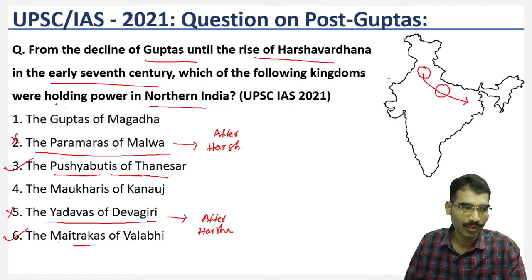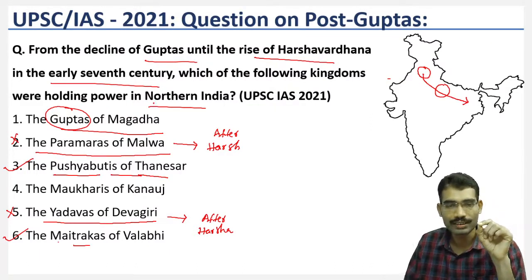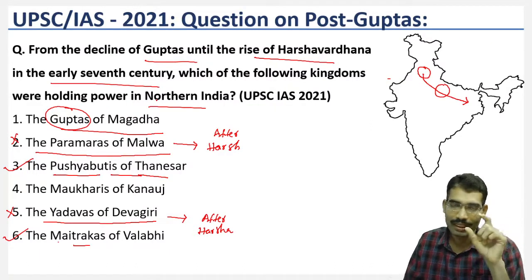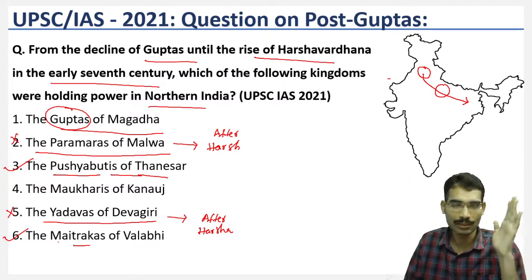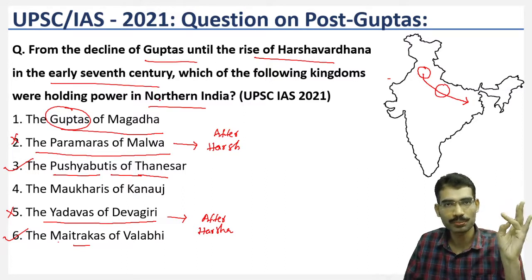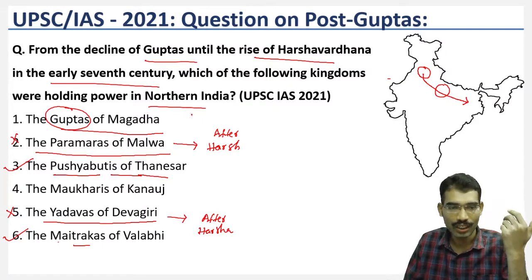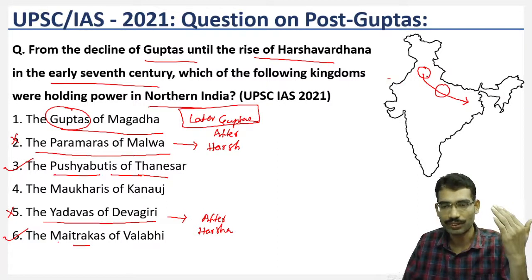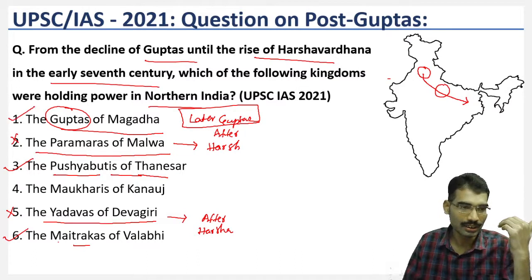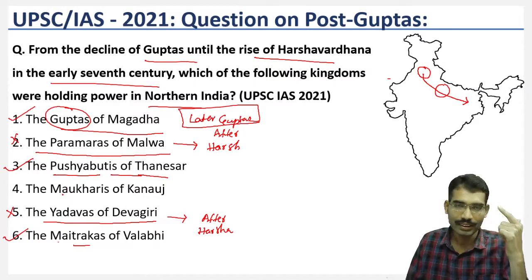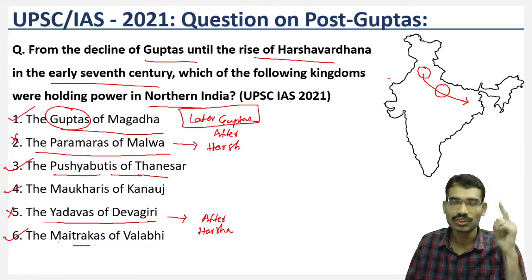Now examining option 1 — the Guptas of Magadha. After the decline of the Imperial Guptas — Samudragupta, Chandragupta I, and Chandragupta II — a new branch called the Later Guptas emerged. They have the same name but no direct relation to the Imperial Guptas. The Later Guptas were present before the emergence of Harshavardhana, and Harsha actually conquered and defeated the Later Guptas. So option 1 is also correct.